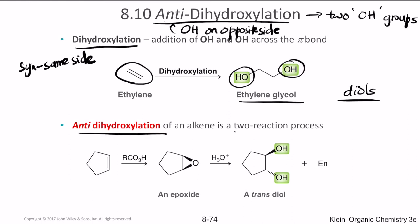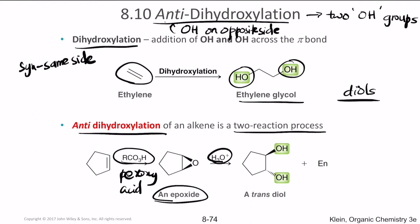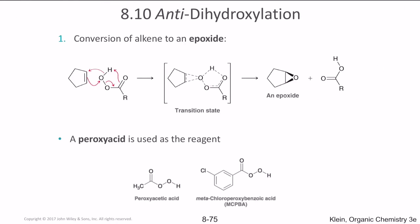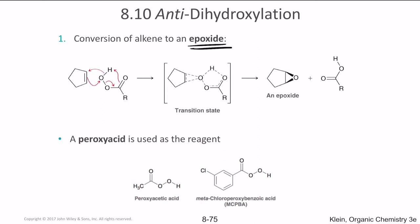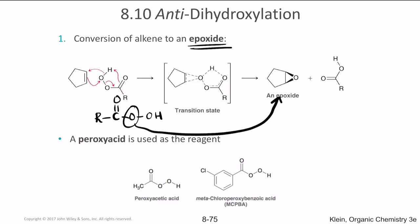Anti-dihydroxylation of an alkene is a two-step process. First, we use a peroxy acid, which creates an epoxide. The epoxide in the presence of acid forms a trans-diol. So the peroxy acid itself creates the epoxide: one of the peroxy acid's oxygens is donated to the alkene, resulting in carboxylic acid formation and an epoxide. The epoxide then undergoes further hydrolysis to form the final diol.